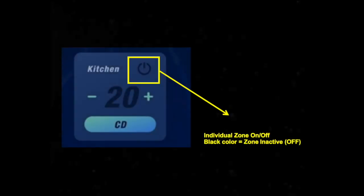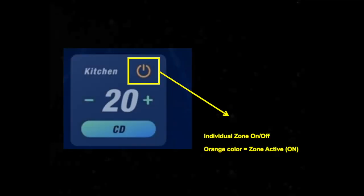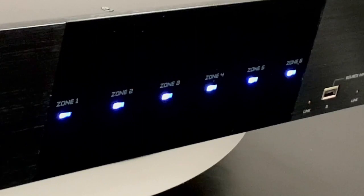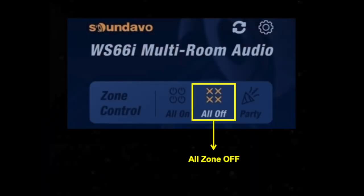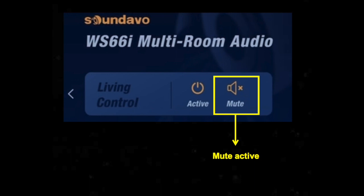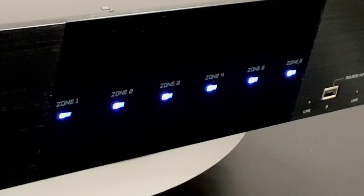On the main WS-66i app UI, you will see the round power symbol icon on each zone's control window. If shown in black, the specific zone is in standby mode and you will not hear any audio playback until you turn it on to active mode, shown in orange. You can also press the all zones on icon to set every zone to active mode — you will see the six LEDs on the front panel turn white. When you press all zones off, all zones will be in standby mode with no audio output, and the LEDs on the front panel will turn blue. Once the mute function is activated, the specific zone's LED will flash to indicate mute is active.